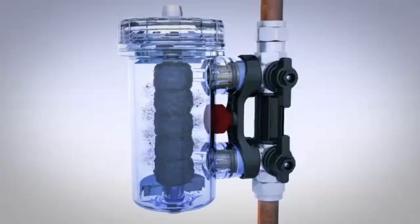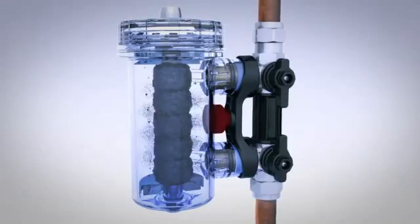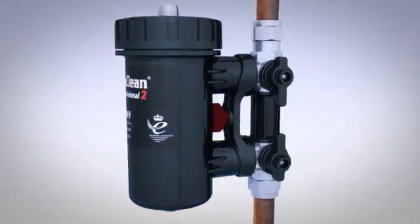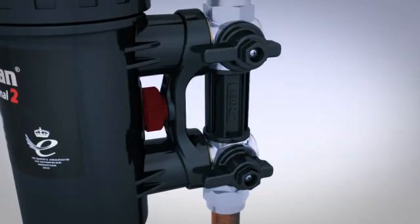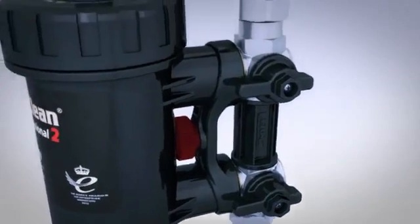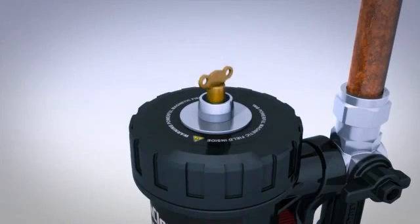All MagnaClean filters allow full flow at all times, even when fully saturated. To service the filter, first turn off both isolation valves, then loosen the air vent to release any internal pressure.